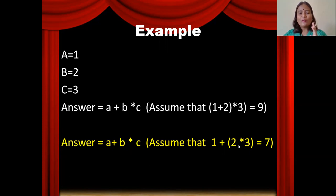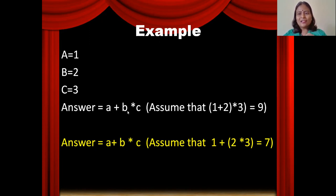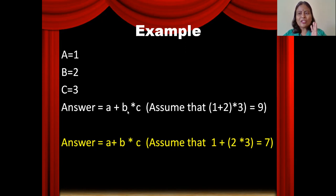There is ambiguity — two different answers from the same expression. To avoid this ambiguity, we must understand how the C compiler evaluates the expression and what is the expected answer from the computer. Only then will our expected answer match the answer produced by the C compiler. That is what we are going to understand in this video.